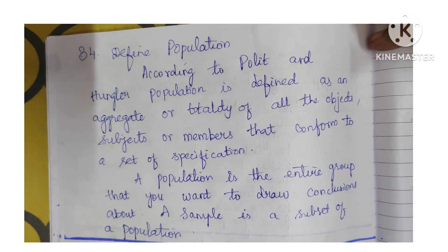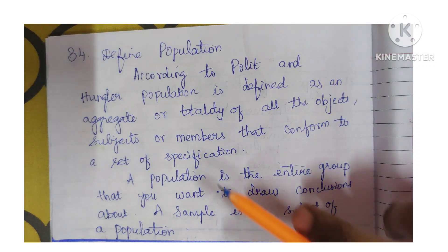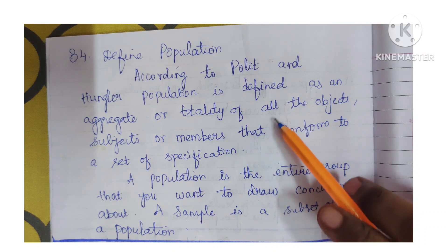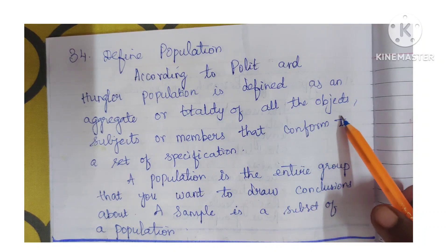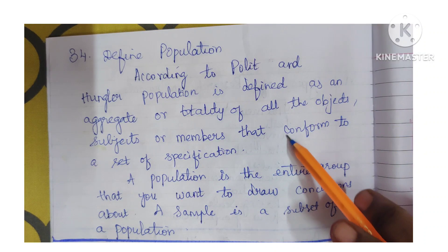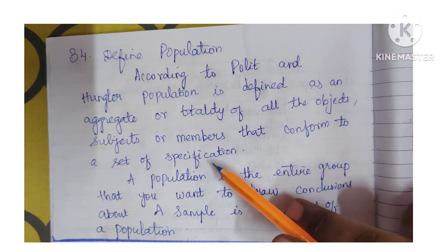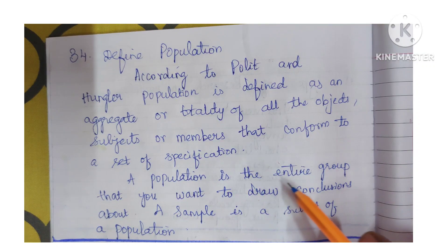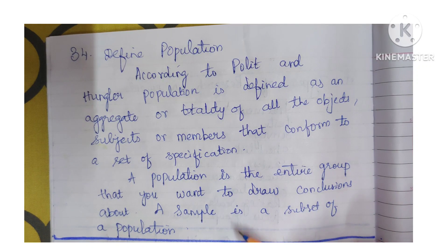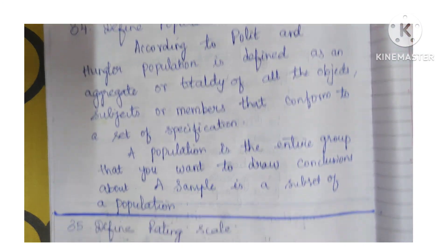Question 34: Define population. According to Polit and Hungler, population is defined as an aggregate or totality of all the subjects, objects, or members that conform to a set of specifications. A population is the entire group that you want to draw conclusions about, and a sample is a subset of a population.